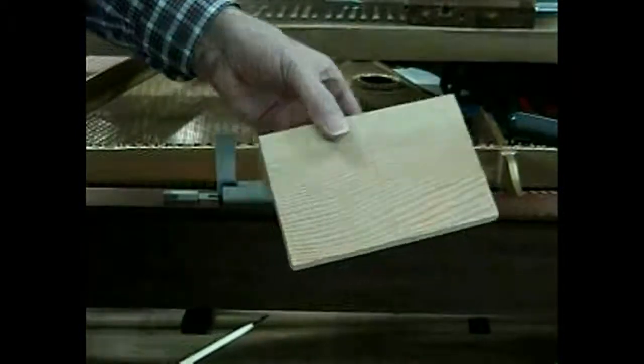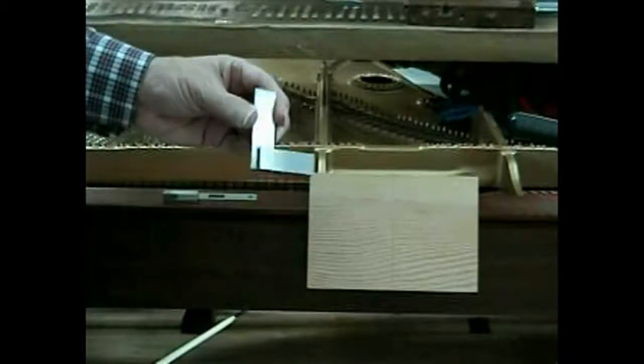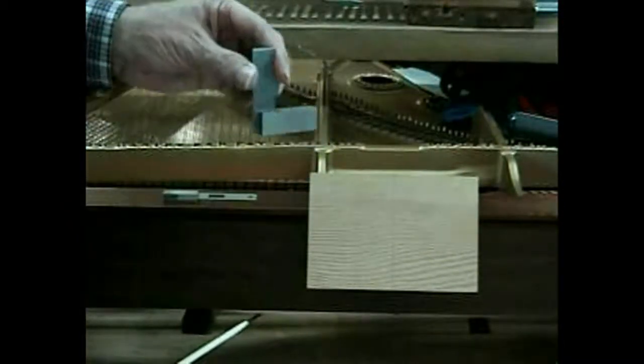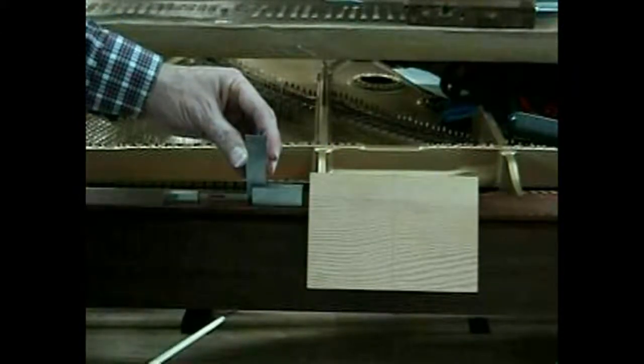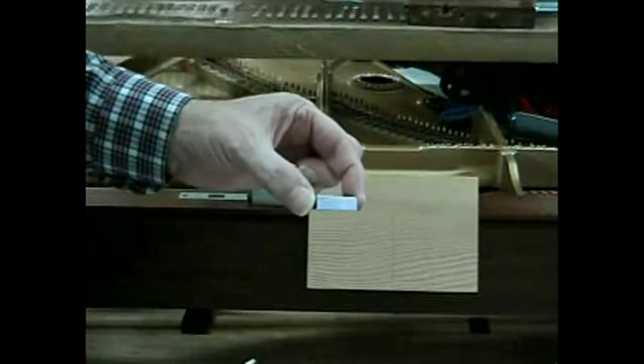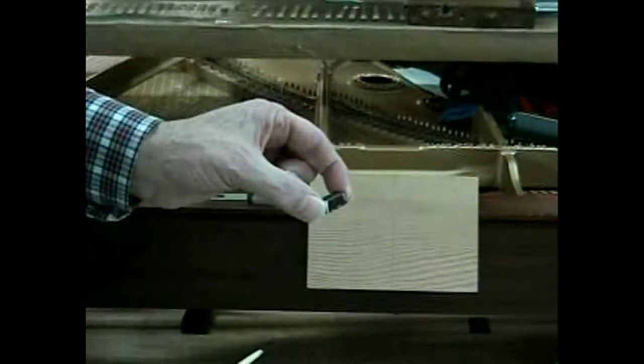The alignment jig that you saw earlier, a small square - these are great, this type, anywhere you can find this, get this. I might have a source for you later. And a little block that we sit on the strings to simulate the dampers.